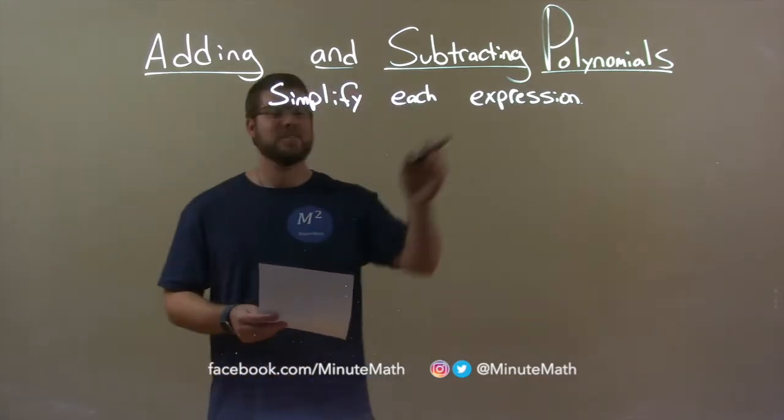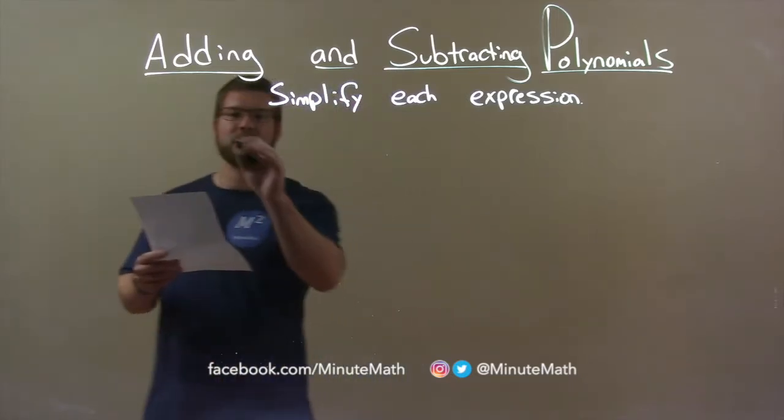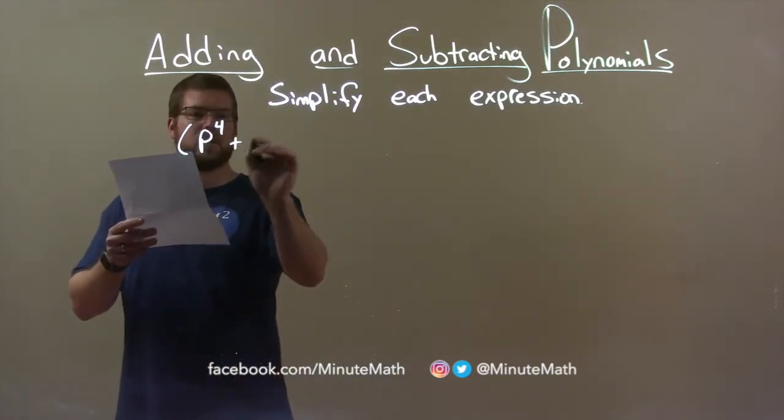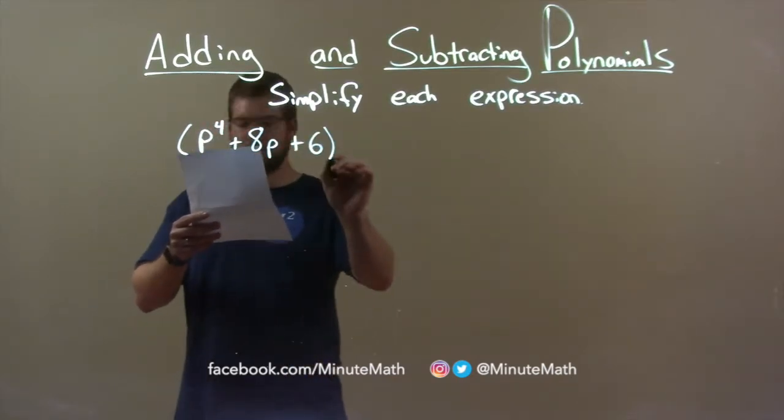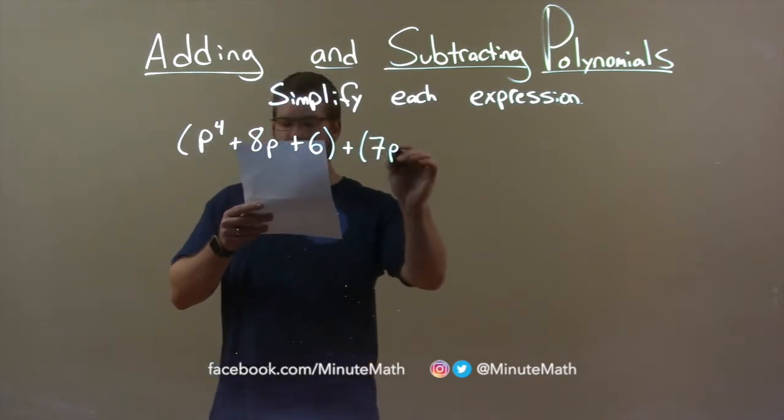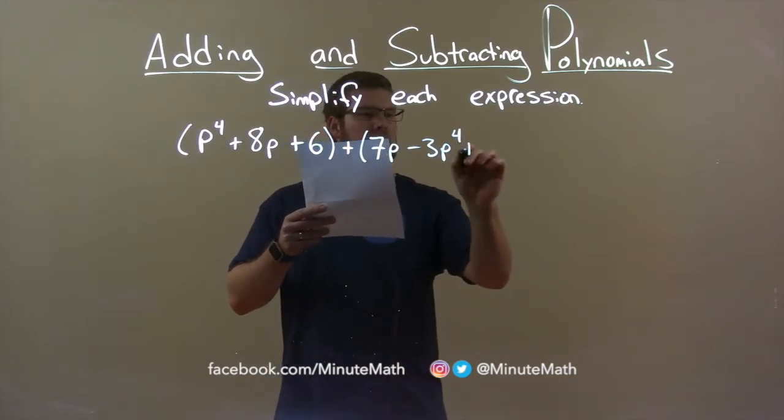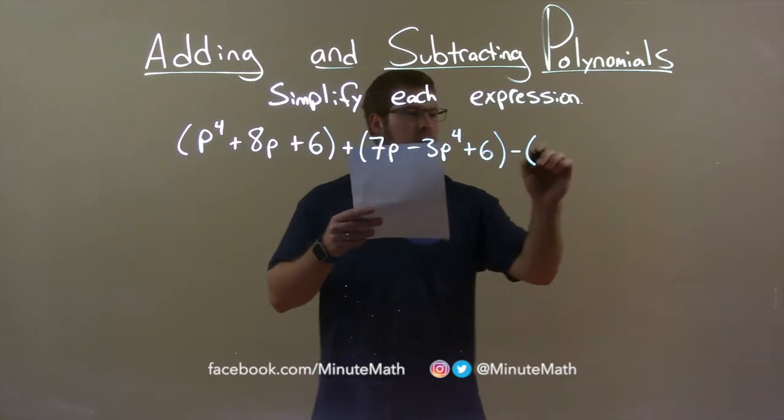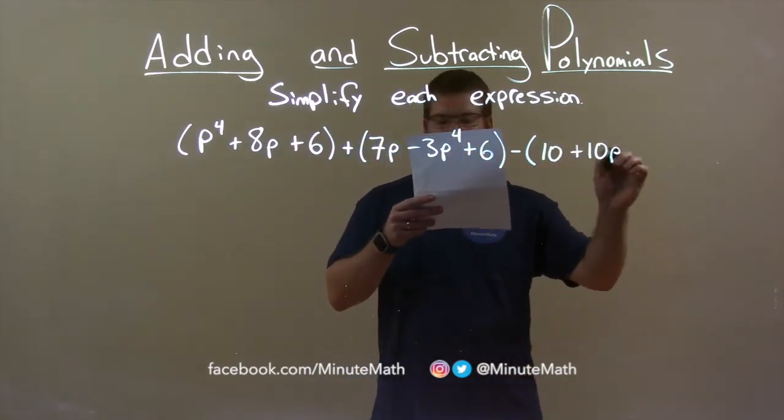We simplify each expression. So if I was given this expression: p to the 4th plus 8p plus 6, plus 7p minus 3p to the 4th plus 6, minus 10 plus 10p.